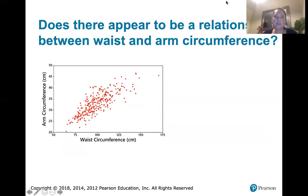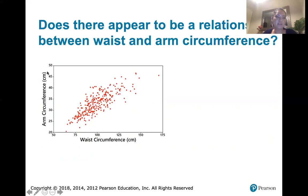Here's our first example. The question is: does there appear to be a relationship between these two variables? What we have here is a graph of waist circumference in centimeters on the x-axis, or horizontal axis, and arm circumference in centimeters for the same person on the y-axis, or vertical axis. We've plotted those together on this grid, and when we plot those ordered pairs together we're able to get a sense of whether or not there's a relationship between waist circumference and arm circumference.